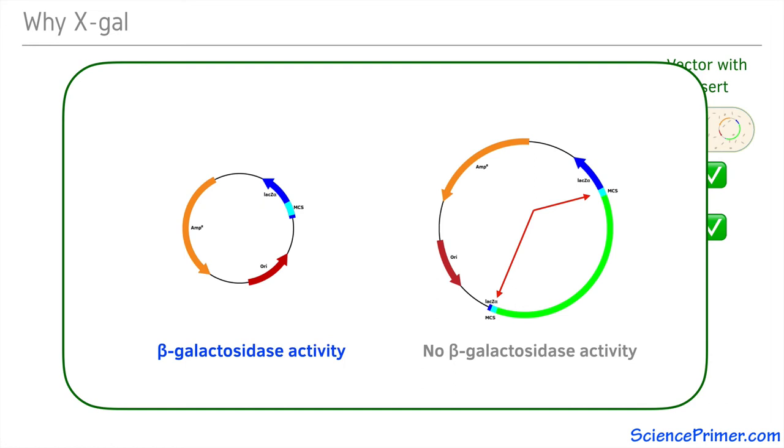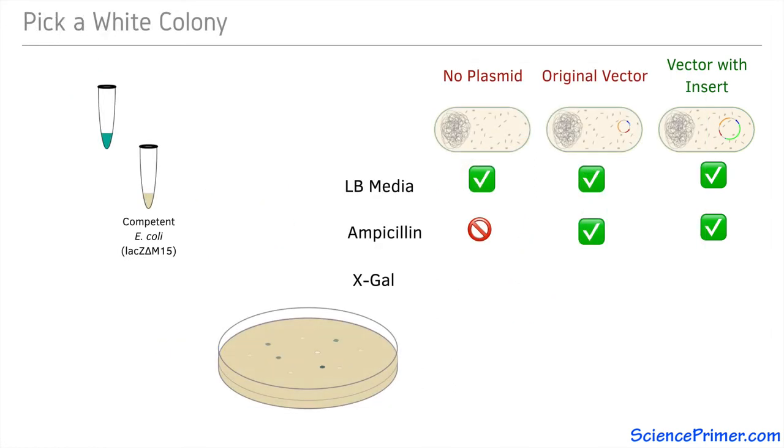This means that as individual cells grow into colonies on the plate, the color of any individual colony will indicate which vector the cells carry. The blue colonies are able to cleave the X-gal, indicating that they have a functional LAC-Z gene and therefore contain the original vector, which is not wanted.